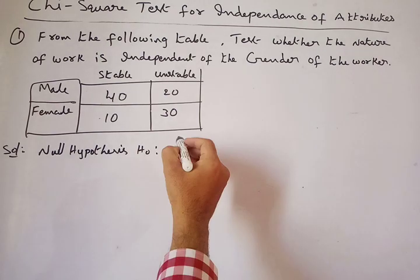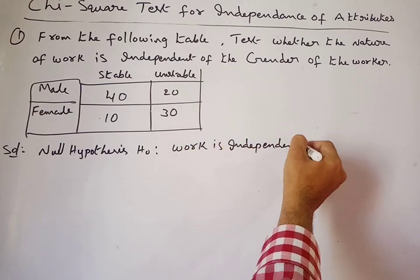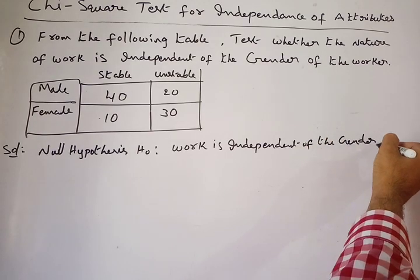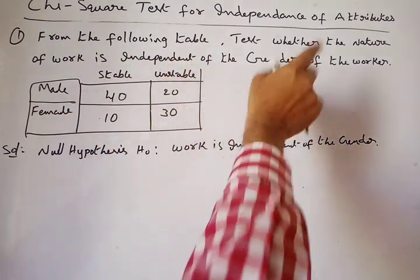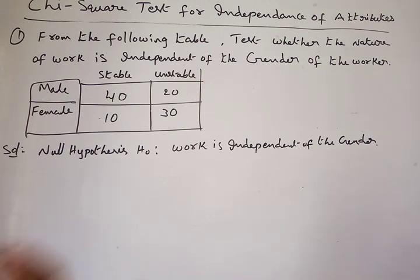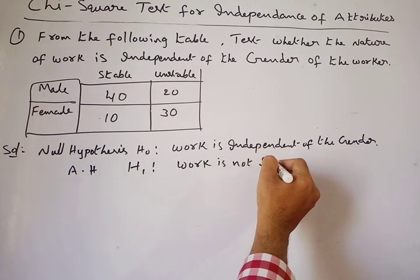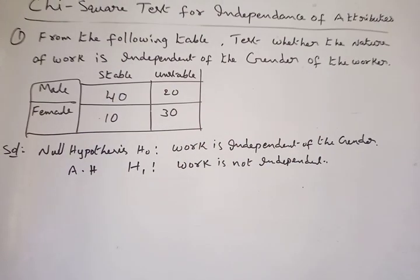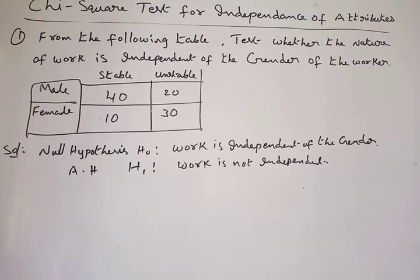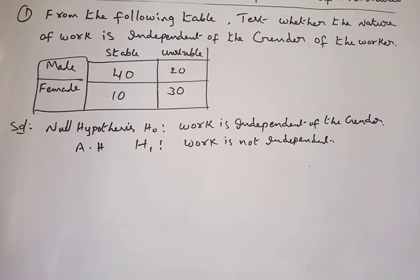Null hypothesis H₀: The nature of work is independent of the gender of the worker. Alternative hypothesis H₁: Work is not independent of gender (i.e., it is dependent). Level of significance: α = 5% (not mentioned in the problem, so we take 5%).